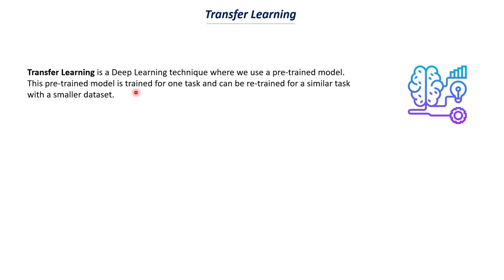Transfer learning is a deep learning technique where we use a pre-trained model. This pre-trained model is trained for one task and can be retrained for a similar task when you have a smaller dataset. When I say pre-trained model, this model has already been trained on a particular dataset, so it has some weights on it. We then use this model and train it with a different dataset.